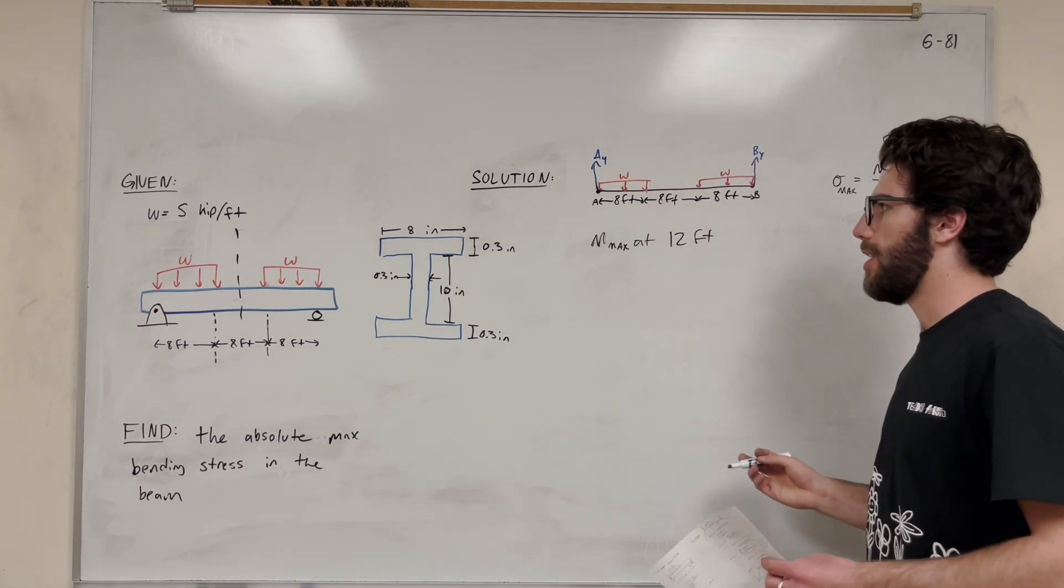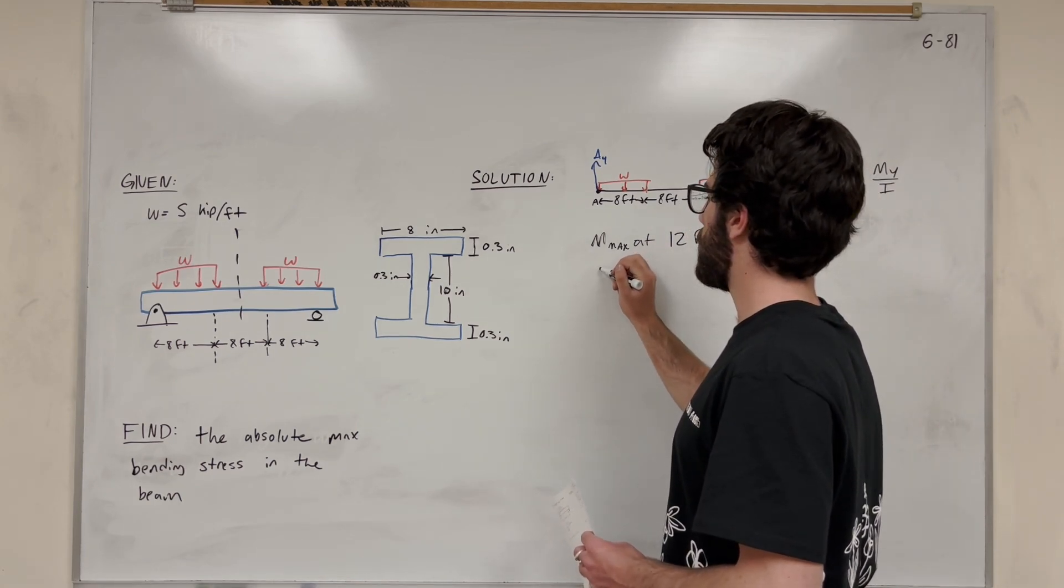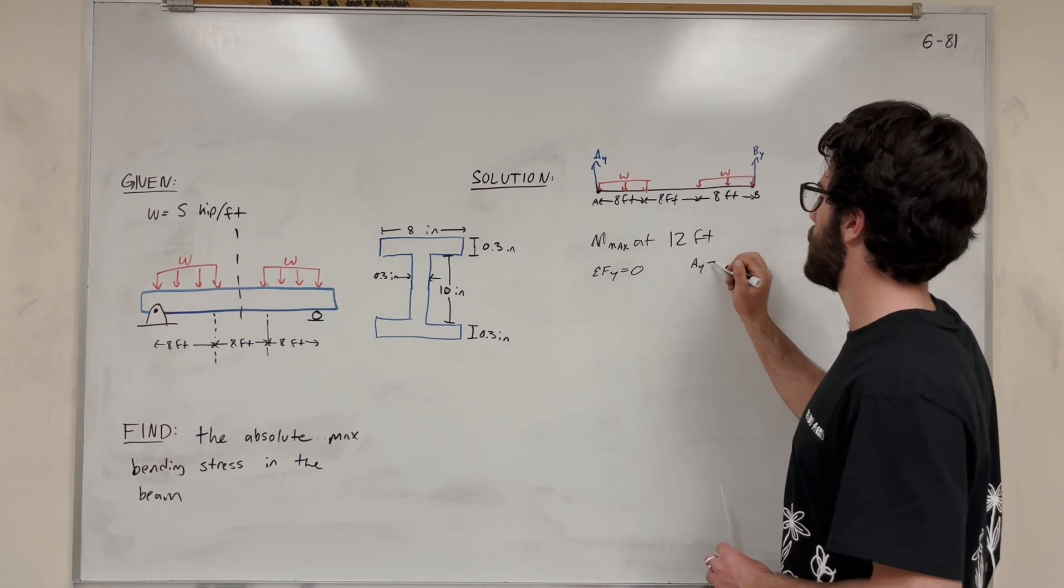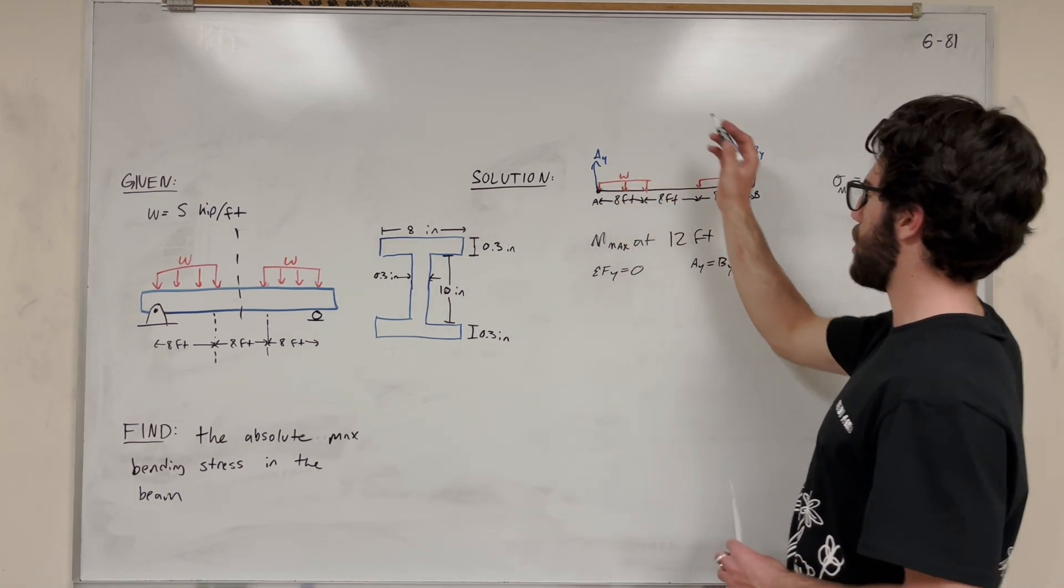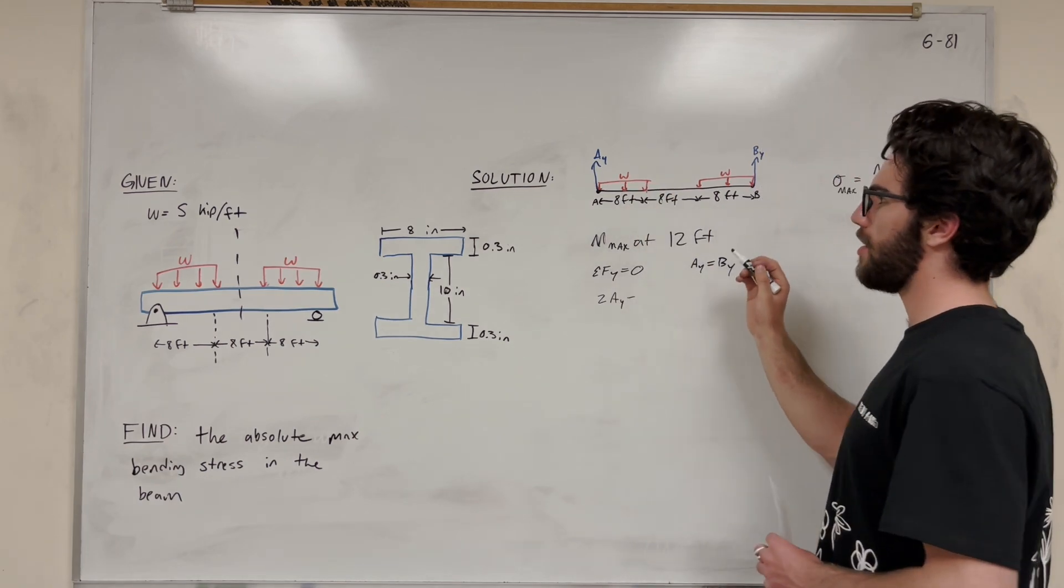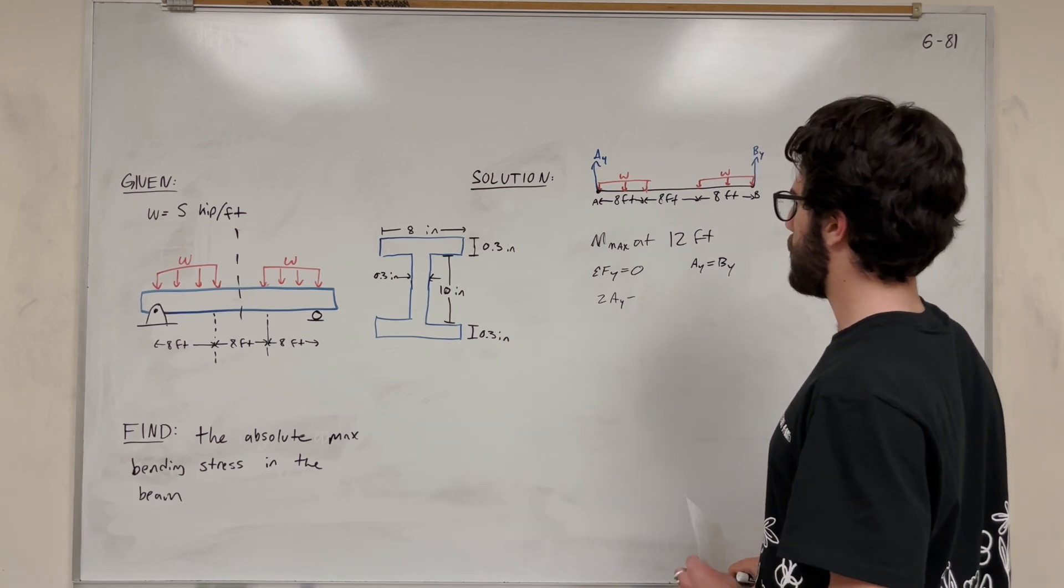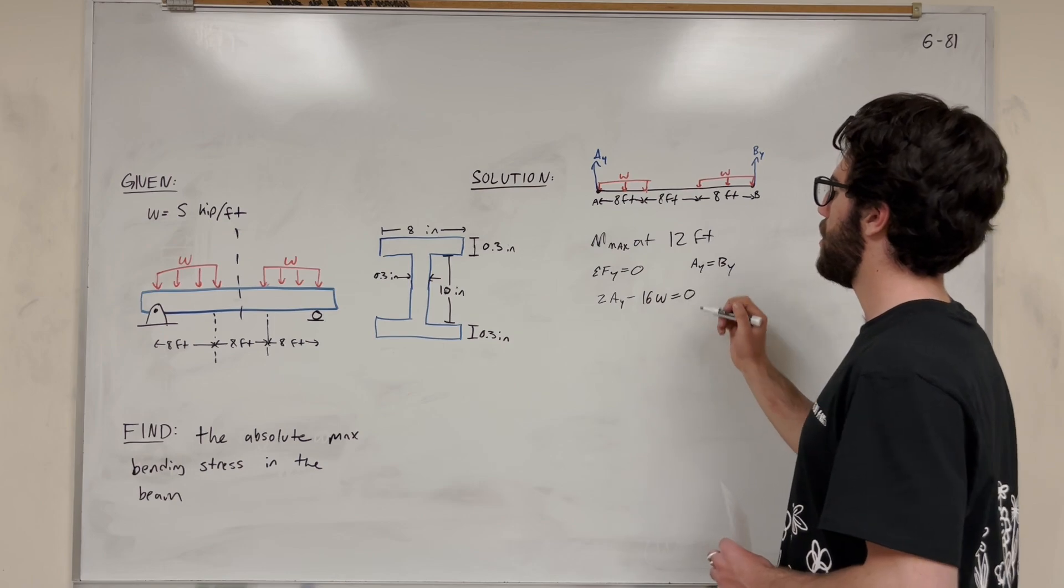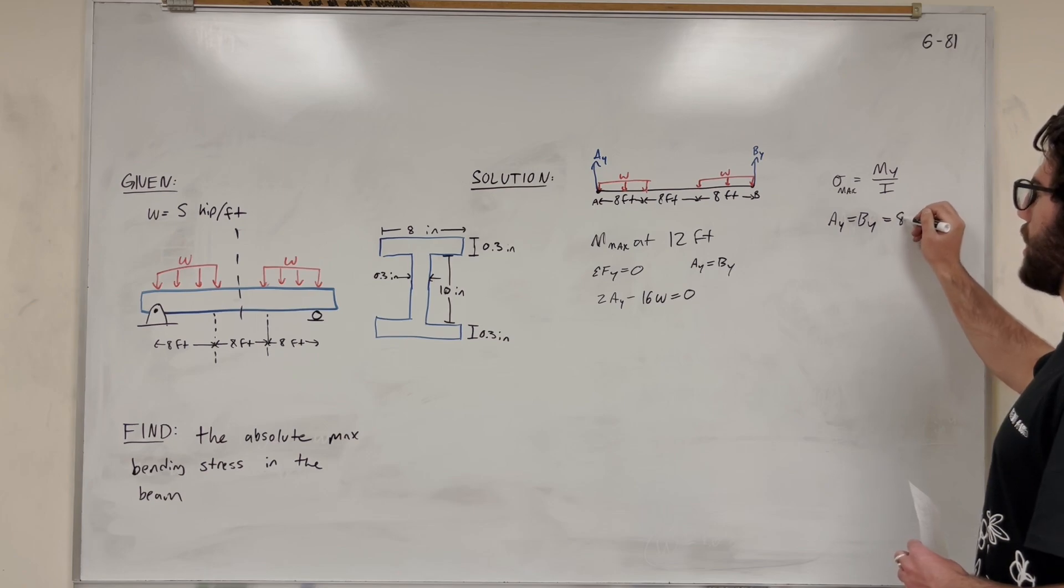So first of all, we have this force body diagram. Let's figure out what our support reactions are so we can draw that cross-sectional area. So sum of the forces in the y is equal to zero. And now we know that A_y has to equal B_y, right? Because it's symmetrical. So we can plug this in as the two forces in the y are A_y and B_y. And so we can just add those together to get 2A_y. And then we have to subtract your distributed load, which is going to be 2, or not 2. I don't know why I did 2. It's 8 feet here and then there's 8 feet here. So it's going to be 16 feet times that distributed load. And all that has to equal 0.